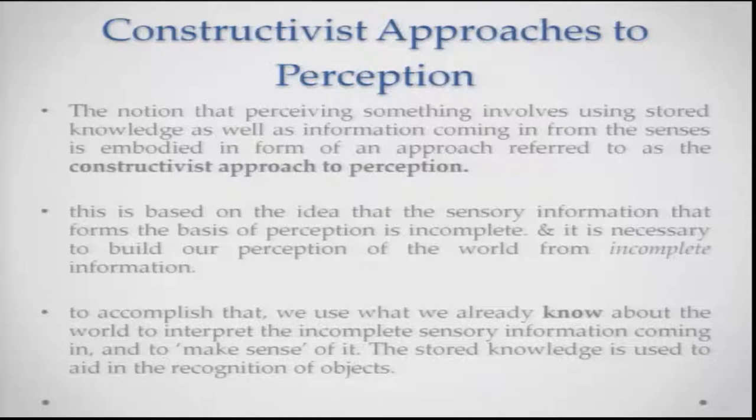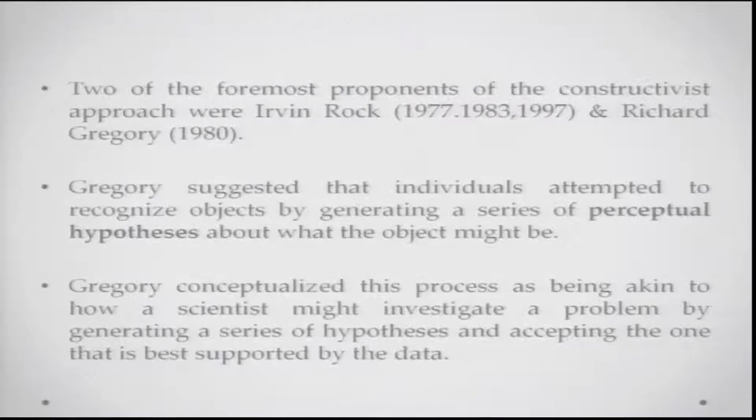Two of the foremost proponents of the constructivist approach were Irwin Rock and Richard Gregory. Gregory basically suggested that individuals attempt to recognize objects by generating a series of perceptual hypotheses about what the object might be. For example, you are looking at somebody behind a particular bike — you still assume whether it is a person, whether it is a male or a female — you are generating different kinds of hypotheses and using your knowledge of the world.